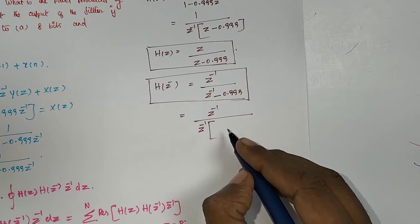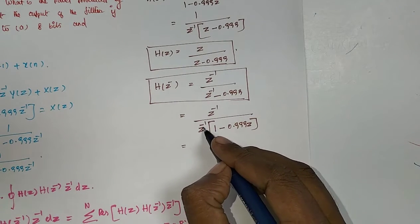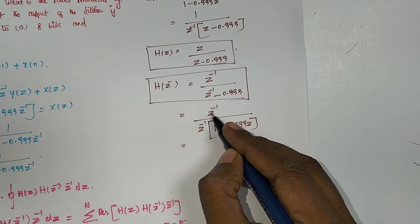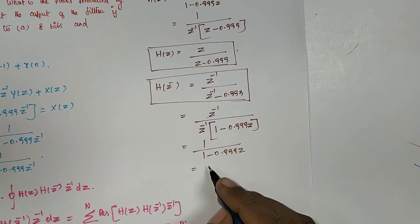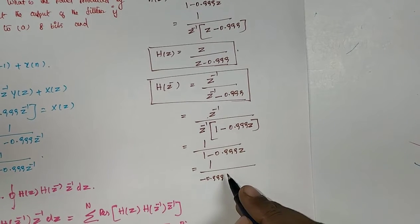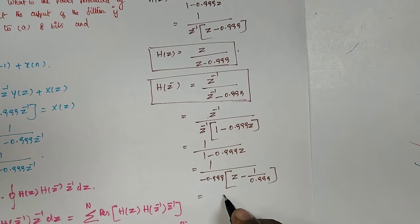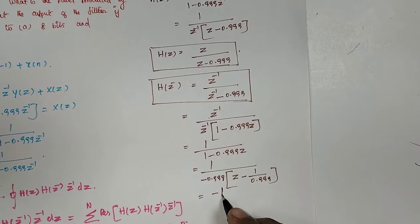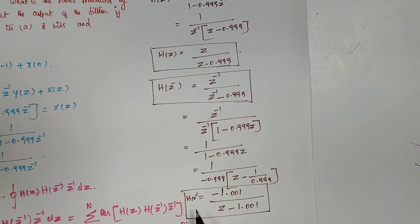Taking z⁻¹ common outside in the denominator, the z⁻¹ terms cancel, leaving (1 − 0.999·z). Factoring out −0.999 gives z⁻¹·[z − 1/0.999], so H(z⁻¹) = −1/(0.999) · 1/(z − 1.001), i.e., H(z⁻¹) = −1.001/(z − 1.001).